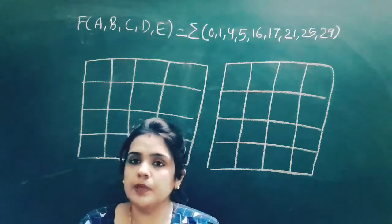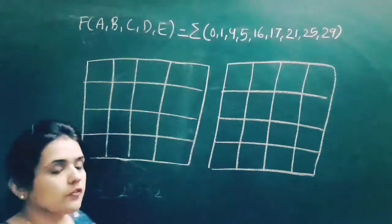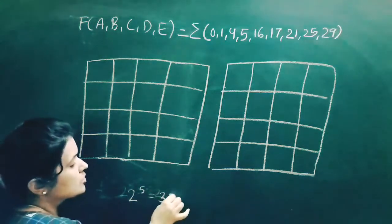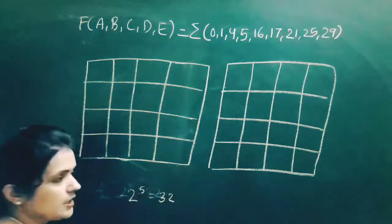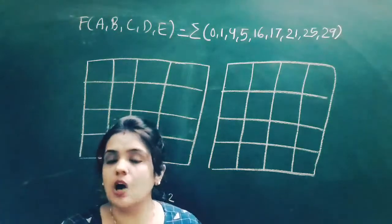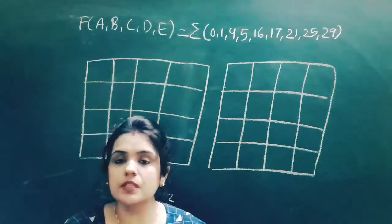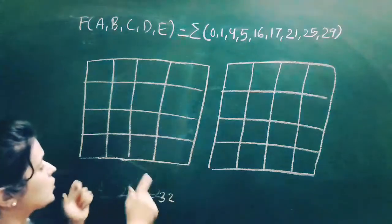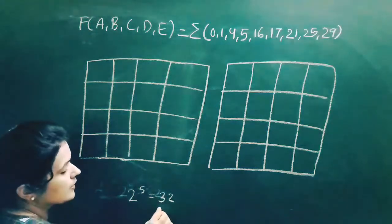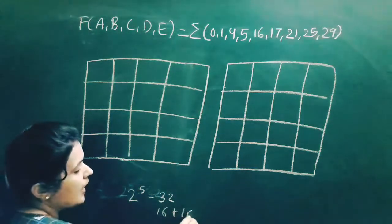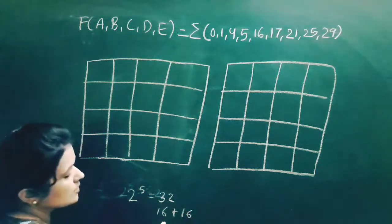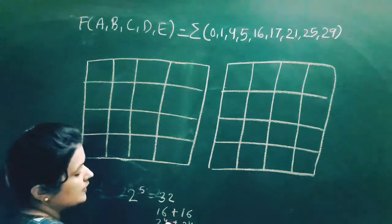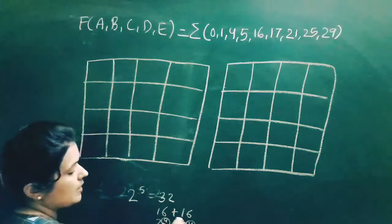We need a 5-variable K-map. For 5 variables, 2 to the power 5 equals 32, so we need 32 blocks. Since 32 equals 16 plus 16, and 16 equals 2 to the power 4, we need two 4-variable K-maps.